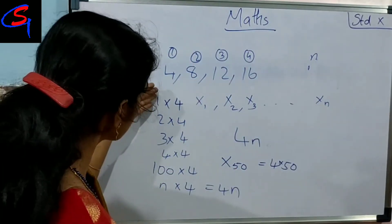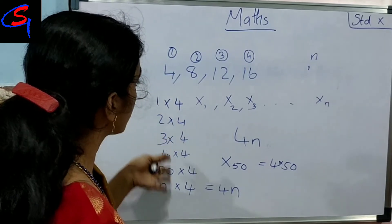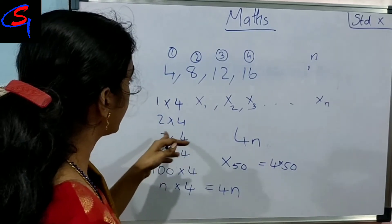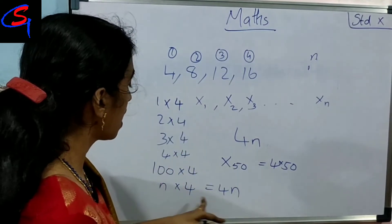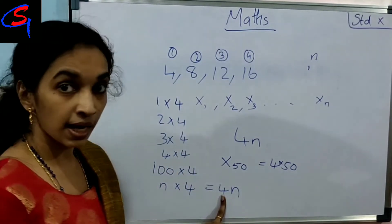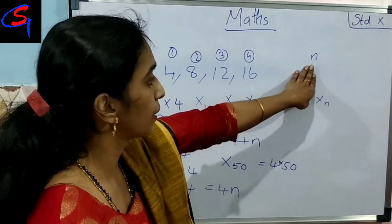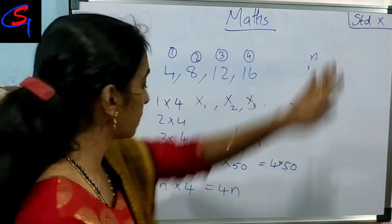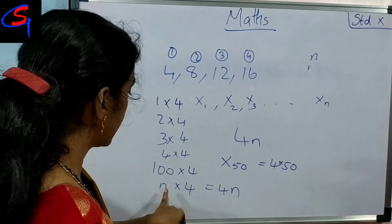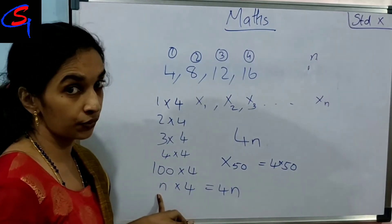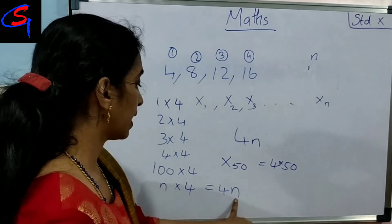Now we write: 1, 4 — 2, 4 — 3, 4. Then we write. What do we write? That: n, 4, 4.